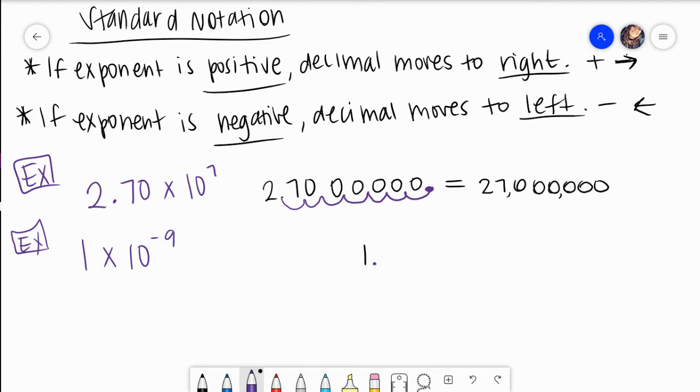Now because my exponent is negative, what it wants me to do is move my decimal to the left. And the number of times we move is our value of our exponent, which would be 9. So we go 1, 2, 3, 4, 5, 6, 7, 8, 9. That's where our decimal is. What you do in all of these spots is you add zeros.